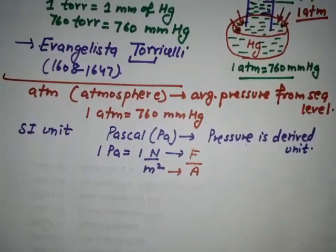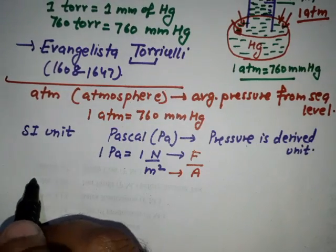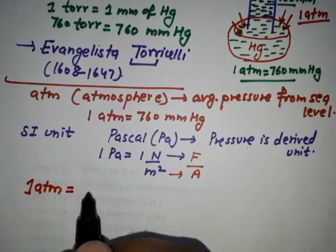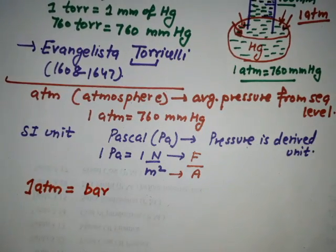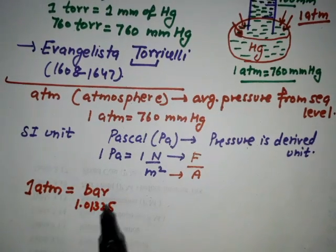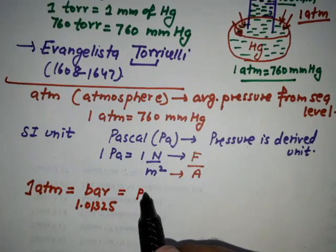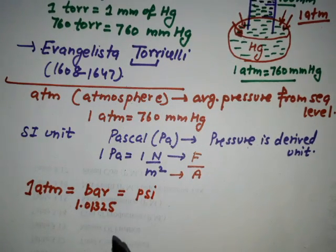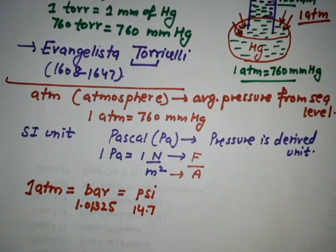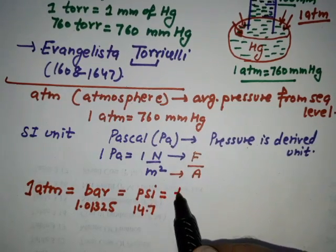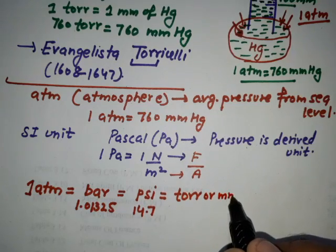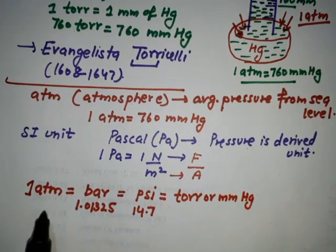One ATM is equal to 1.01325 bar. One ATM is also equal to PSI, which is pounds per square inch, equal to 14.7 PSI. It is also equal to torr, which is the same as mm of mercury: 1 ATM equals 760 torr or 760 mm of mercury.